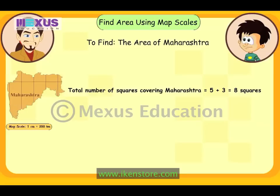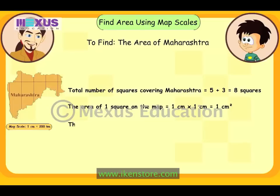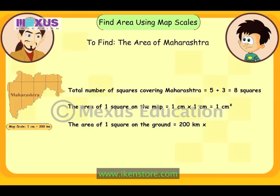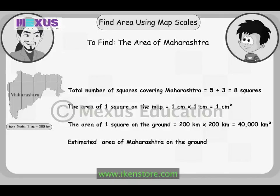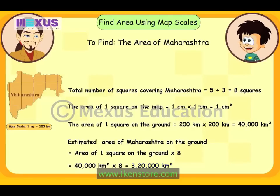Absolutely correct! JC, what's the area of a square? Side multiplied by side! Correct. So the area of 1 square on this map will be 1 cm multiplied by 1 cm, that is 1 square cm. And the area of 1 square on the ground will be 200 km multiplied by 200 km, that is equal to 40,000 square km. The estimated area of Maharashtra on the ground will be the area of 1 square on the ground multiplied by 8 squares, equal to 3,20,000 square km!